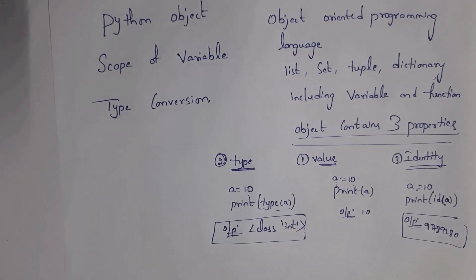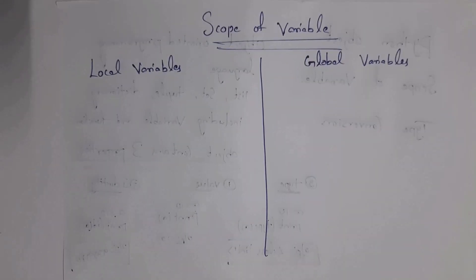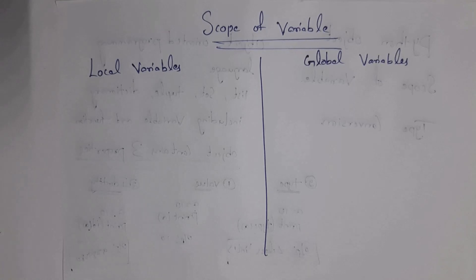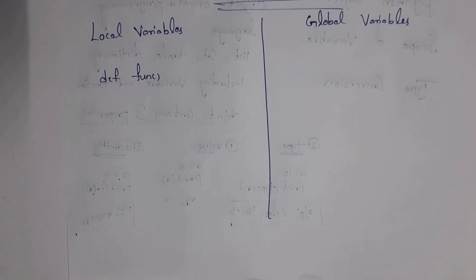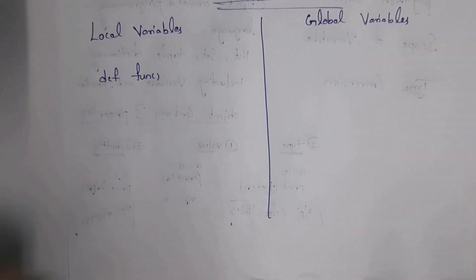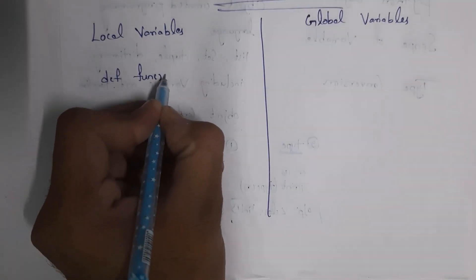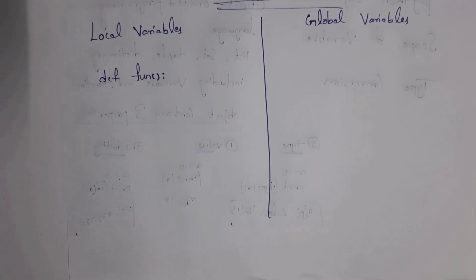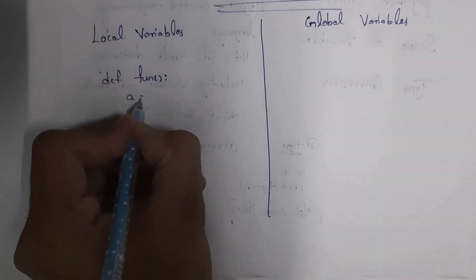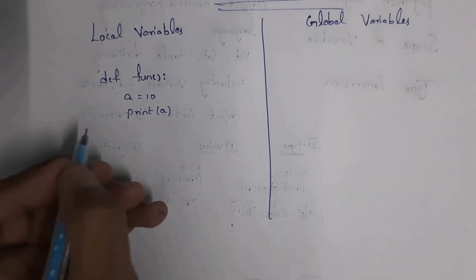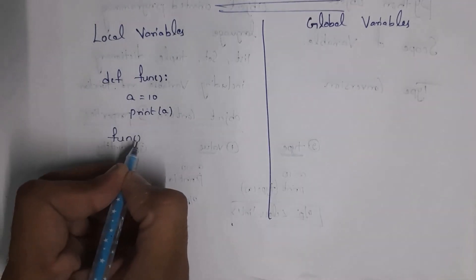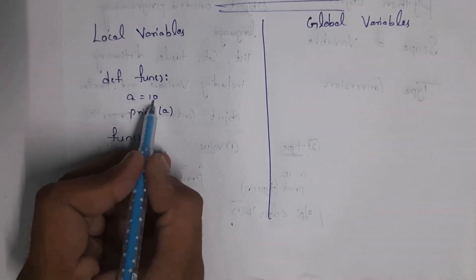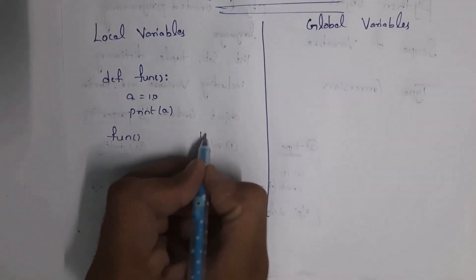The next topic is scope of variables. There are mainly two types: local variables and global variables. Variables declared inside a function are known as local variables. For example, let's create a function named 'fun' using the def keyword. Inside this function, I declare a = 10 and write print(a). When I call the function by writing fun(), I get output 10.